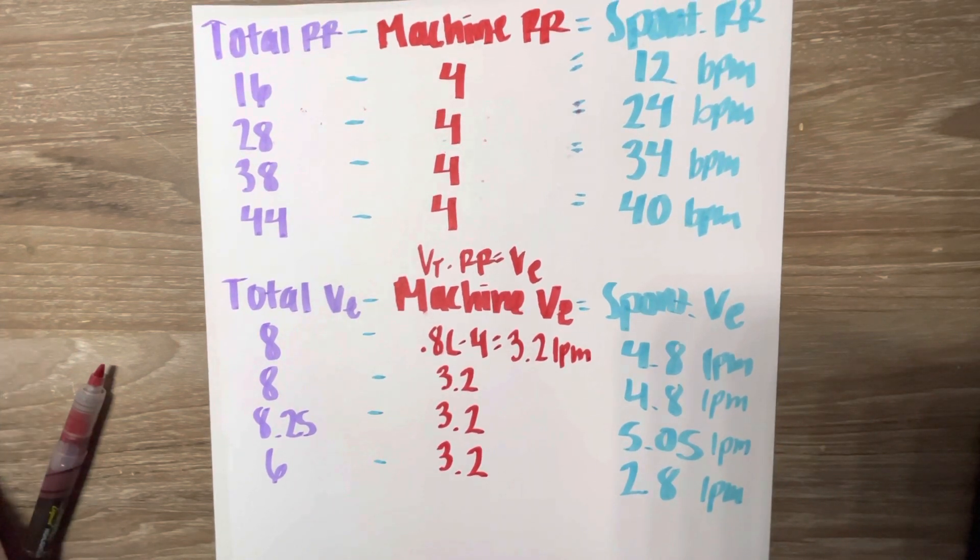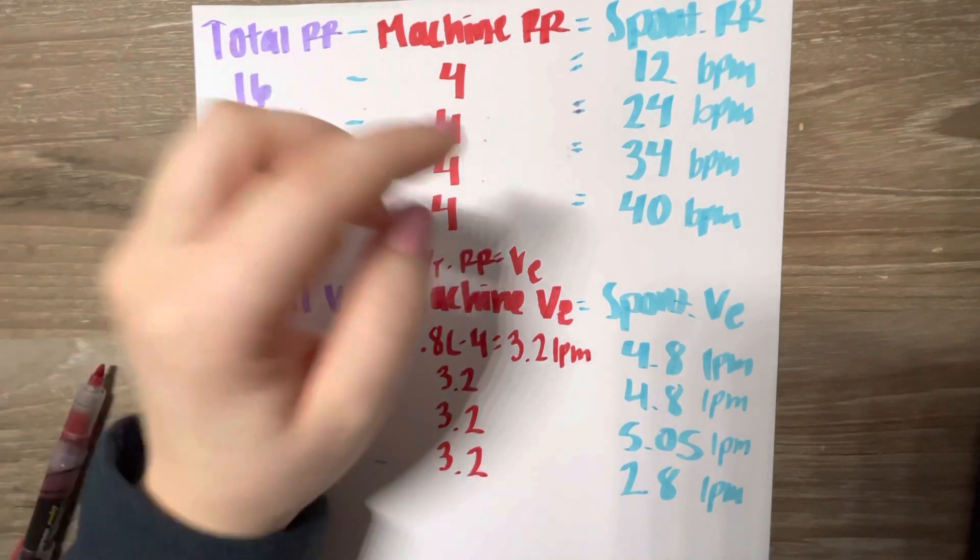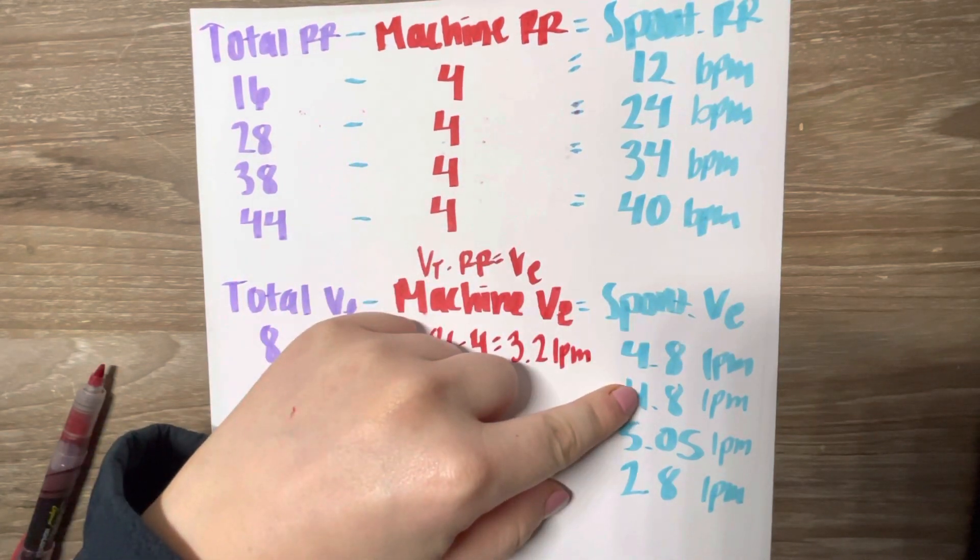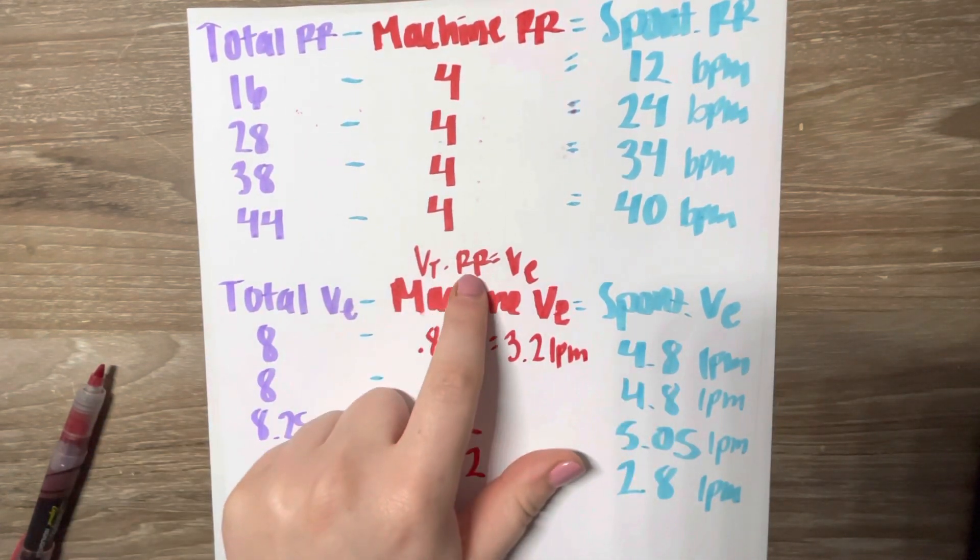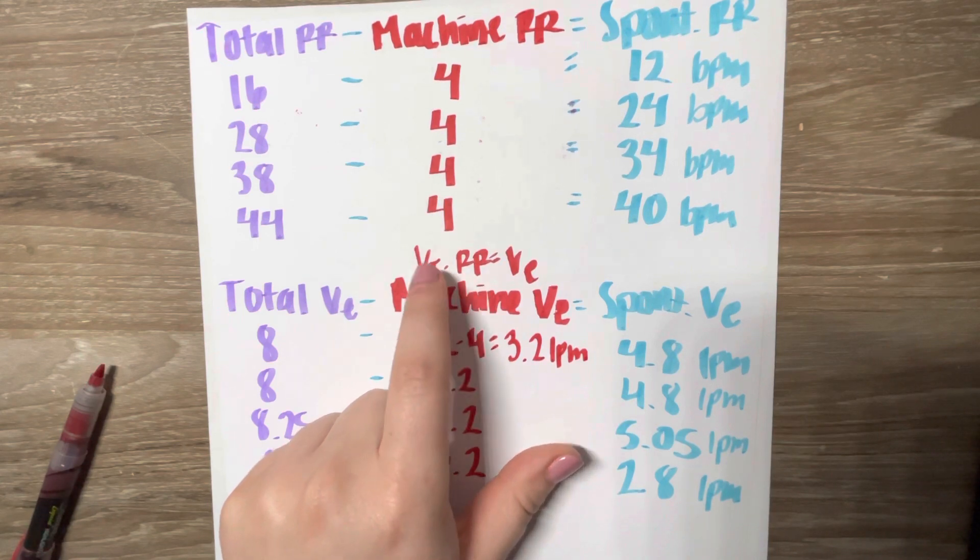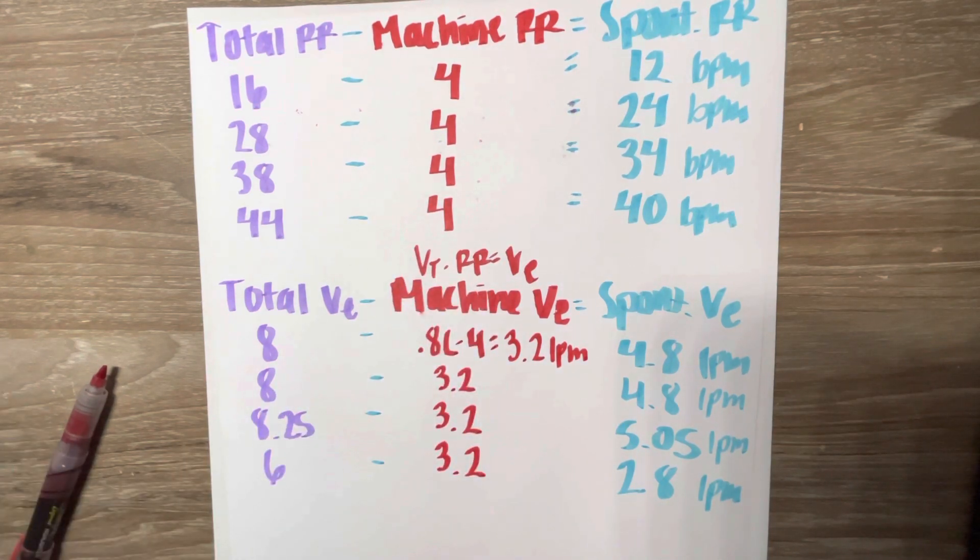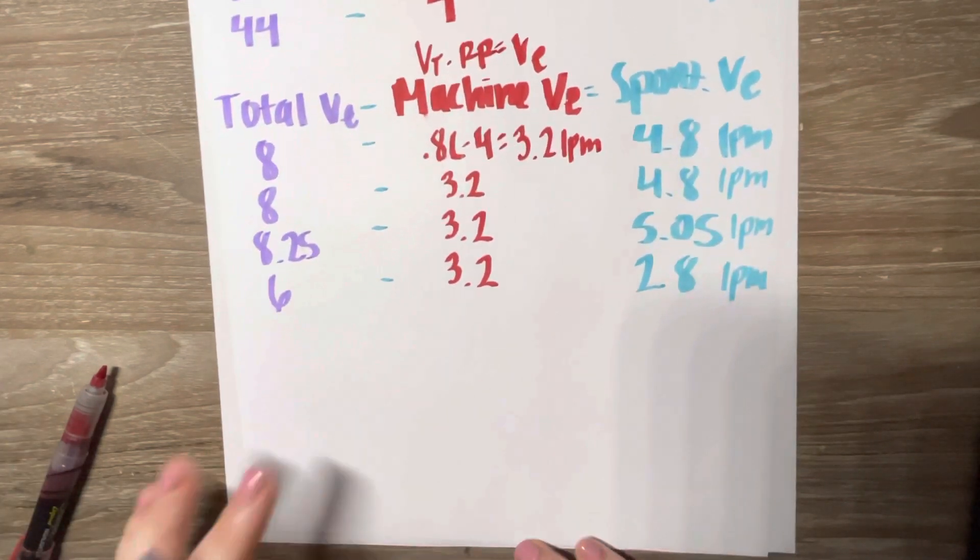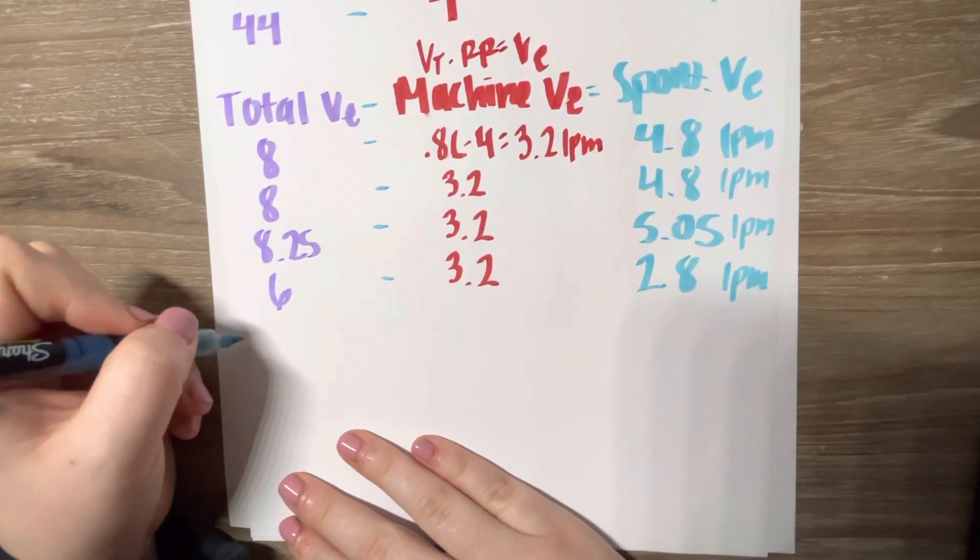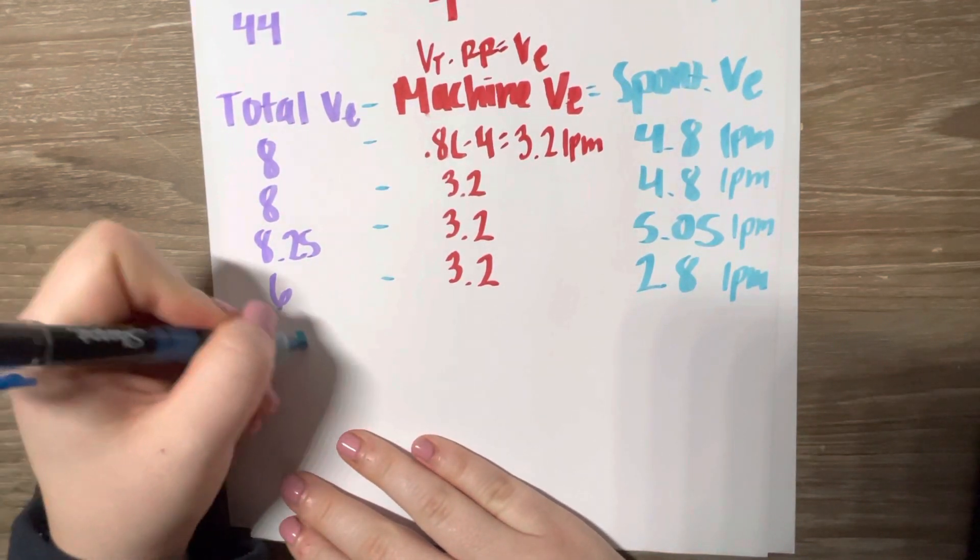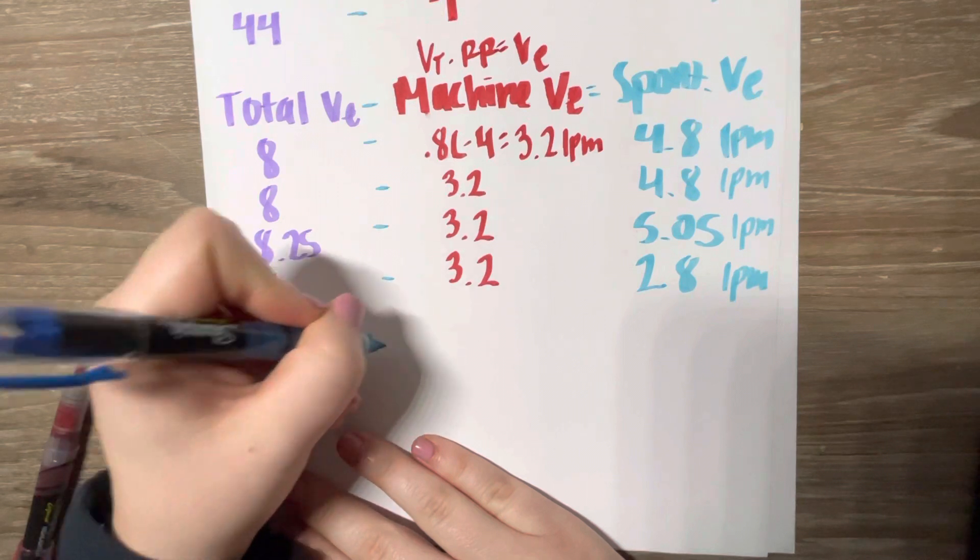Ultimately we are trying to find the spontaneous tidal volume. So now that we have our spontaneous rate and our spontaneous minute volume, we can use this formula here and rearrange it to find our tidal volume. So I'm going to write down the formula again. Minute volume equals tidal volume times respiratory rate.